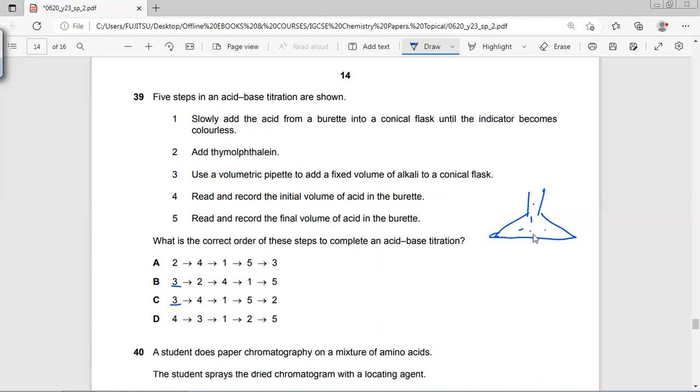But if the first drop of acid neutralizes the whole alkali, we are going to pick option B. Initial volume, then we can note the final volume. Slowly add, obviously this one will give us the end point.